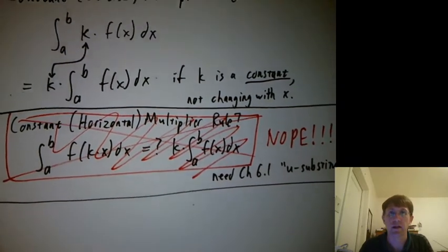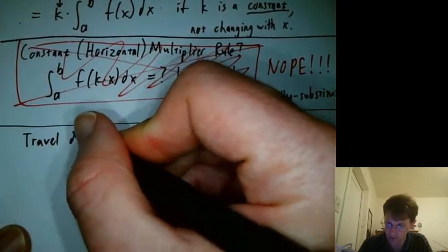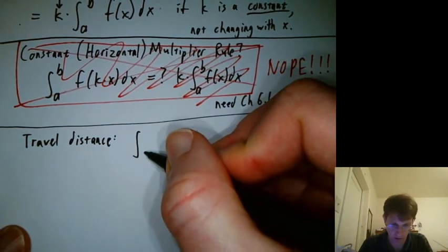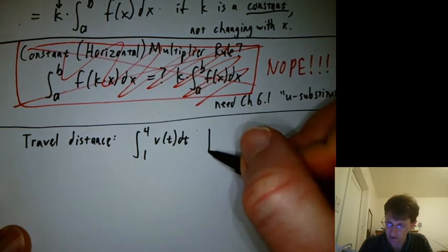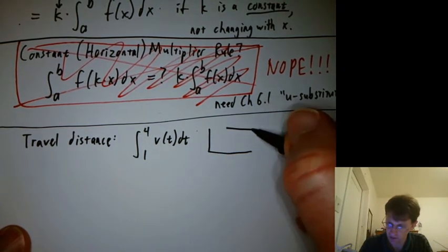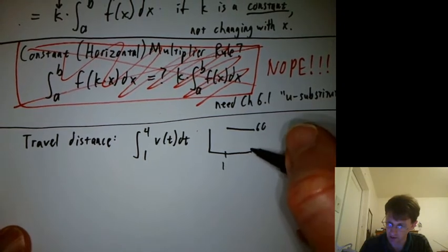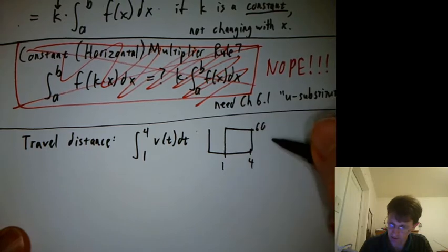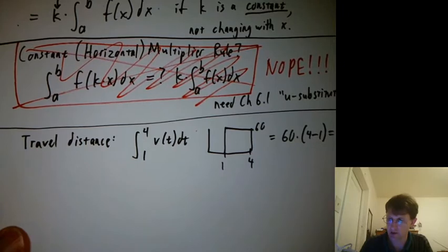So we'll leave that as kind of a cliffhanger. Let's think more about travel distance. The integral 1 to 4 v of t dt, if v of t was constant in that interval like it was for our situation, we'd say that that box area is 60 times 4 minus 1, which is 180.